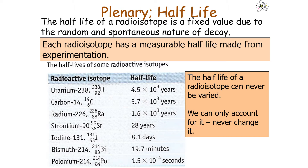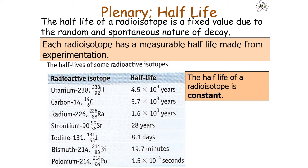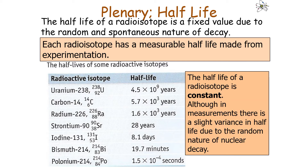The half-life of a radioisotope can never be varied — we can only account for it, never alter it. It is always constant. In measurements there is a slight variation in half-life because of the random nature of radioactive decay. However, the half-life of a radioactive isotope cannot be affected by any man-made factors such as temperature, pressure, or such the like.